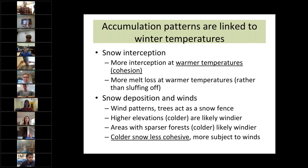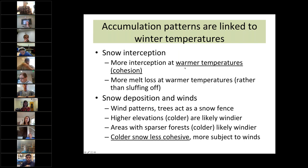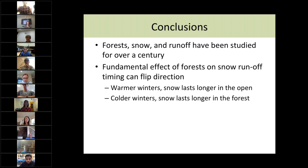To summarize: accumulation patterns are linked to winter temperatures. Snow interception is greater at warmer temperatures due to increased cohesion, with more melt loss at warmer temperatures. Trees tend to act like a snow fence in colder places, which are likely windier with sparser forests and less cohesive snow. The fundamental effect of forests on snow runoff timing can flip direction — important to consider if you are analyzing forest change, snow change, and climate change. You need to make sure your modeling system can represent these changes in relationships.